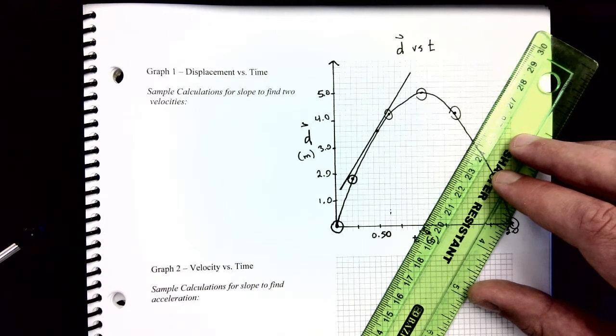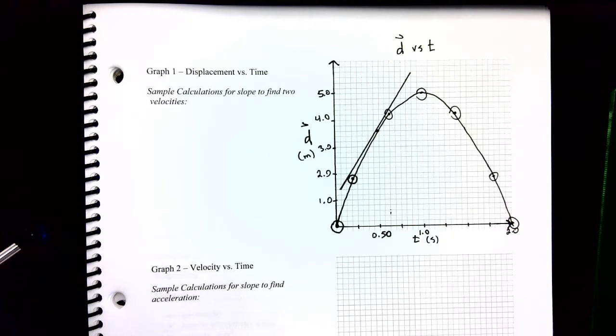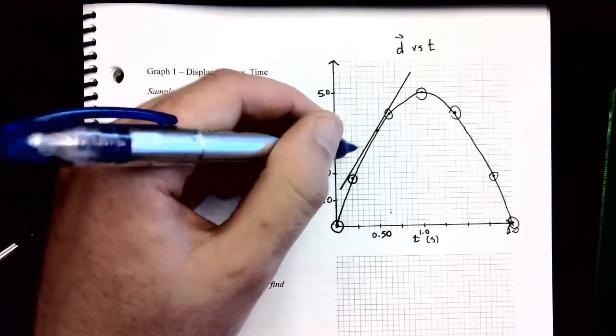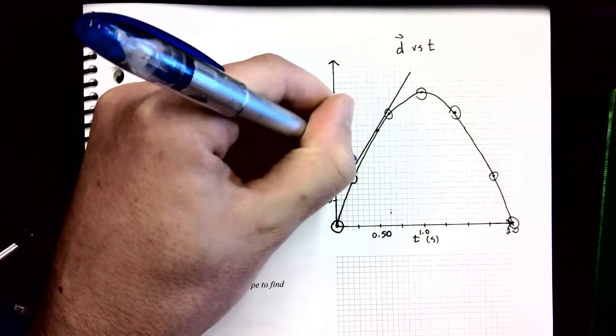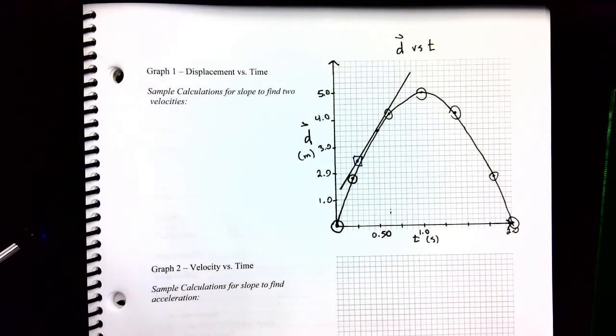Alright, so draw a tangent on your graph. The next thing we're going to do is we're going to work out the slope of that tangent. And to do that, we need two points off of the tangent line. So I'm going to go and I'm going to label two points here, which are more or less easy to read. And I'm going to put a box around them, a square, to identify that these aren't plotted points, but these are points off my tangent line. I'd like you to put the squares as well.